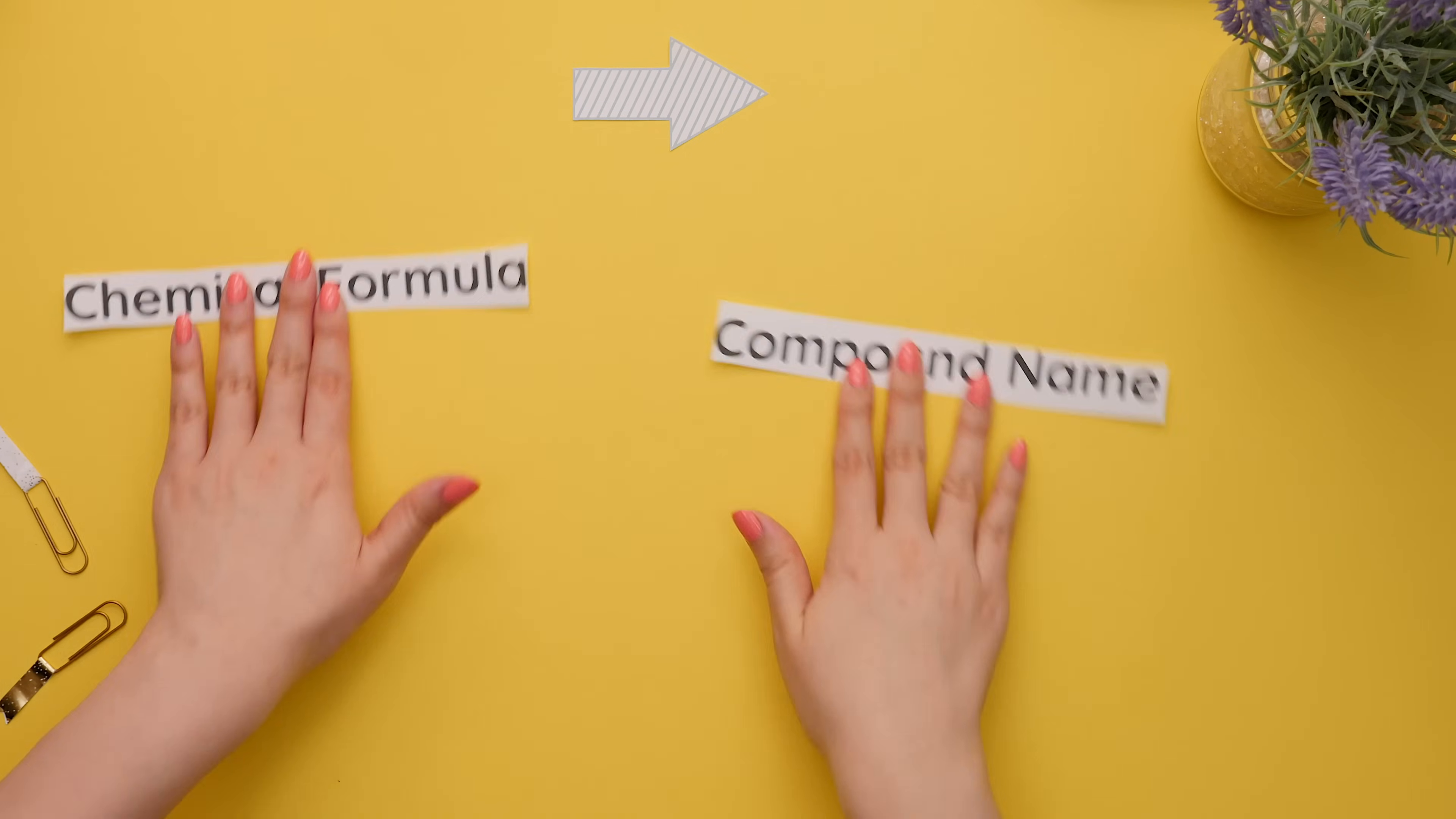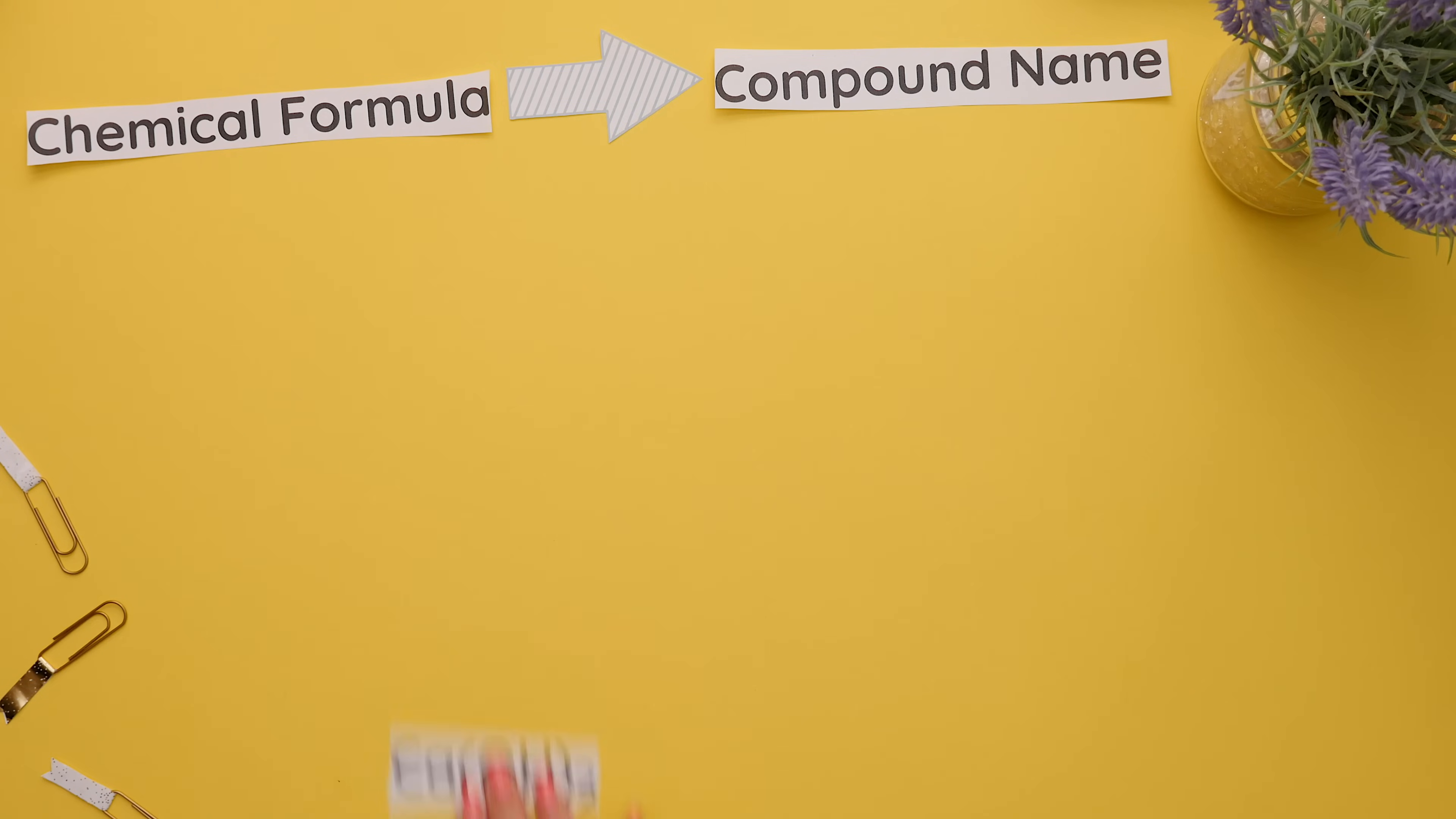Now going from the chemical formula to the compound name, we will identify the name of the metal and the name of the polyatomic ion. Ca is calcium and OH is hydroxide, so our compound name is calcium hydroxide.